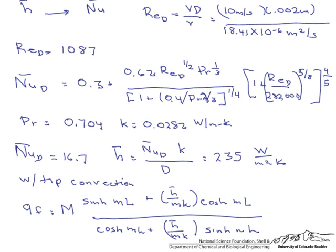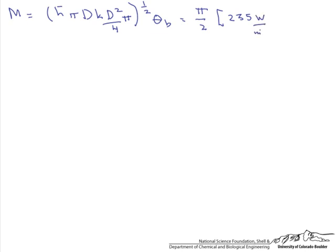So the first thing that we are going to do is calculate that big M. So M equals H bar pi D over K times pi D squared over 4 to the one half. We multiply this by theta sub B. So this equals pi over 2, because we can pull that pi squared over 4 out of the square root, times 235 watts per meter squared K times 0.002 meters. And we have it D squared and D, so that is cubed.